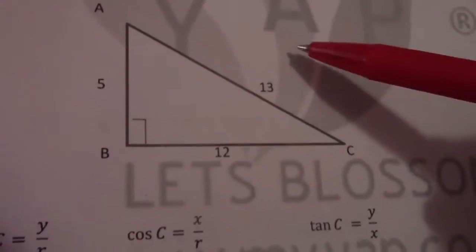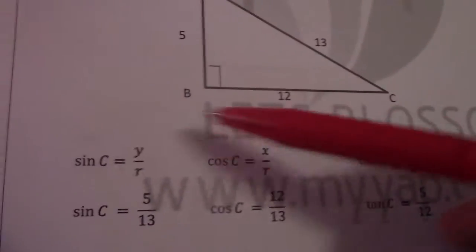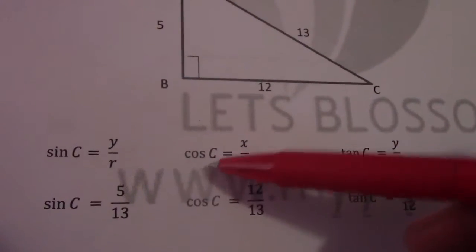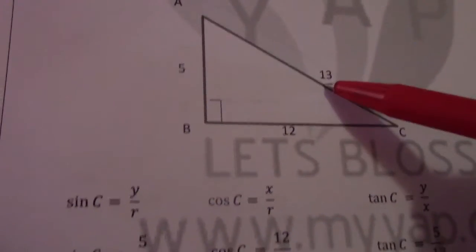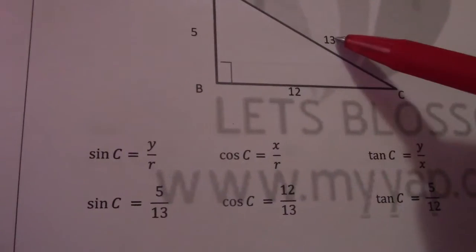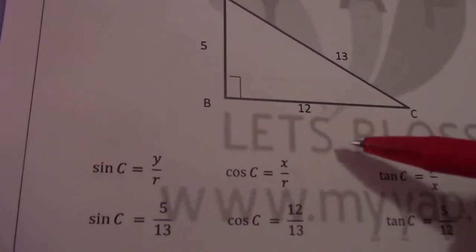So, how do we use this? Give you a right-angled triangle and we ask you to define what is sine. In this case, they say sine C, so we're using C as a reference point. We have to define sine C. Sine C is Y over R. My Y value is 5, my R value is 13. So, sine C equals 5 over 13.